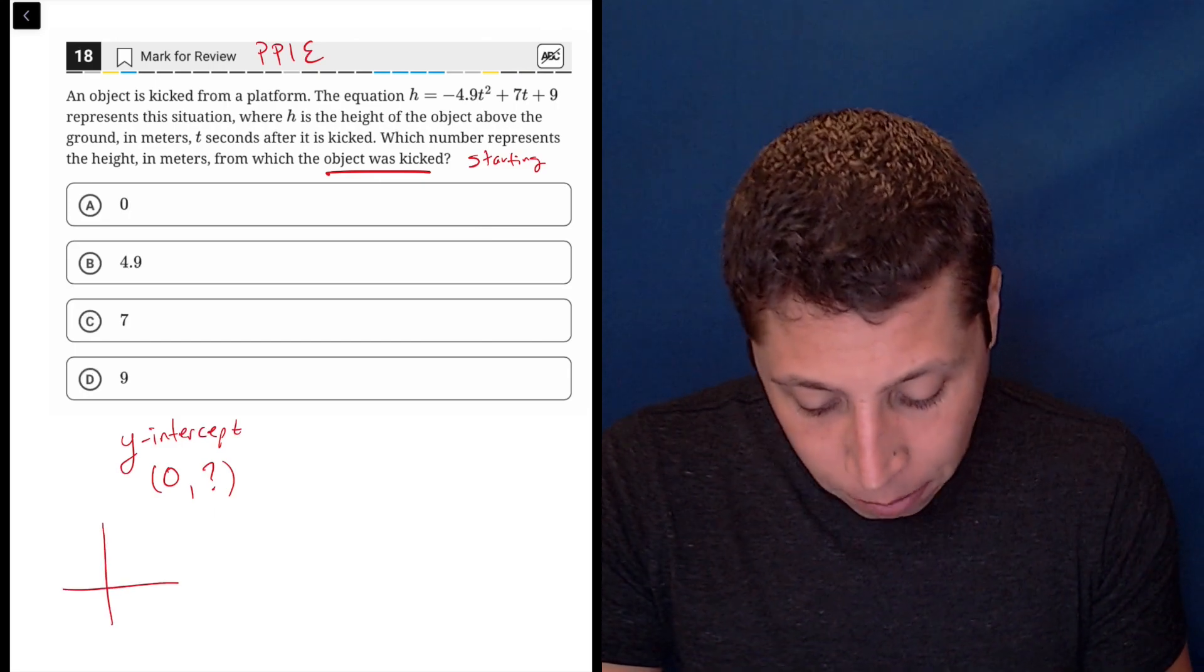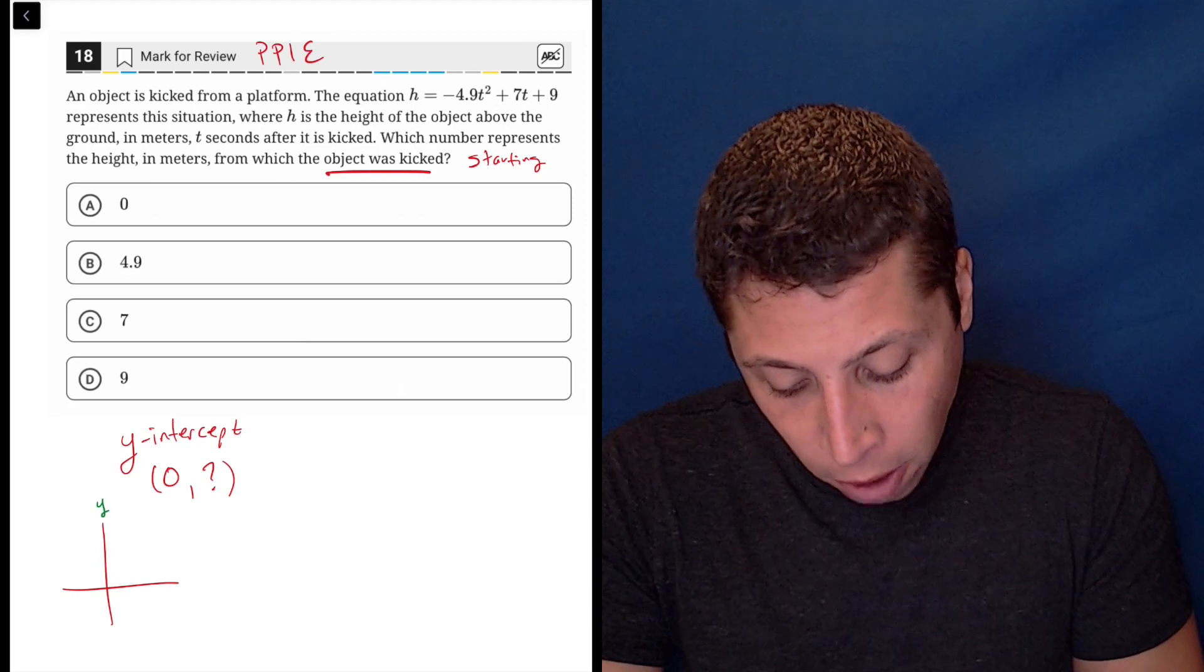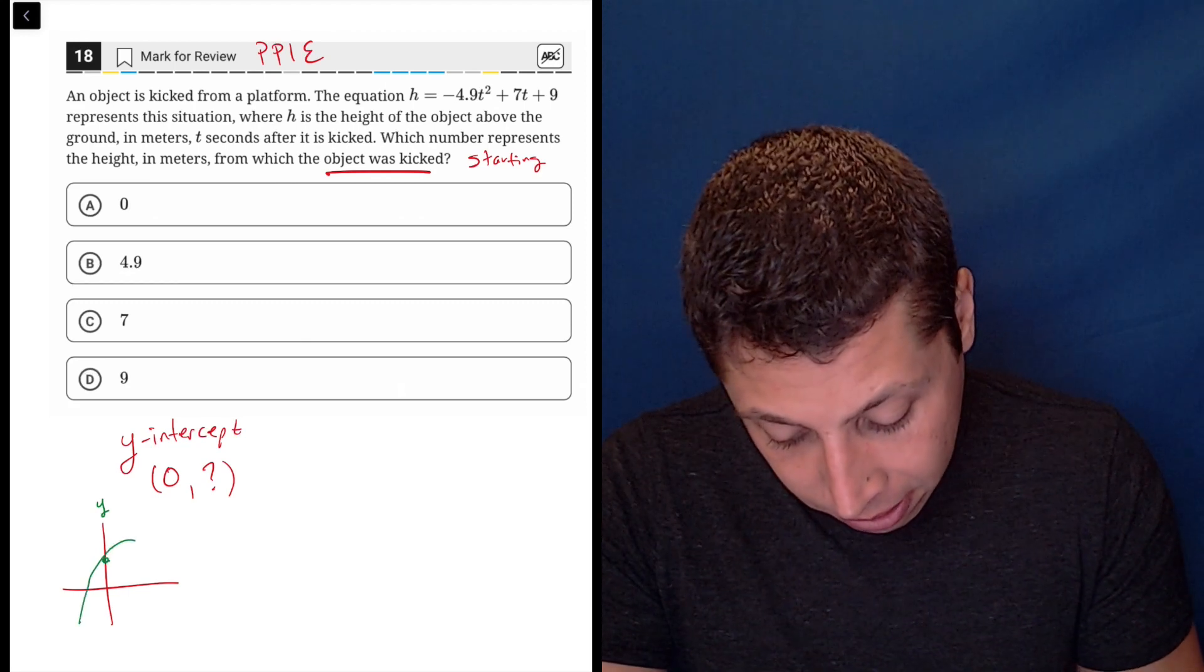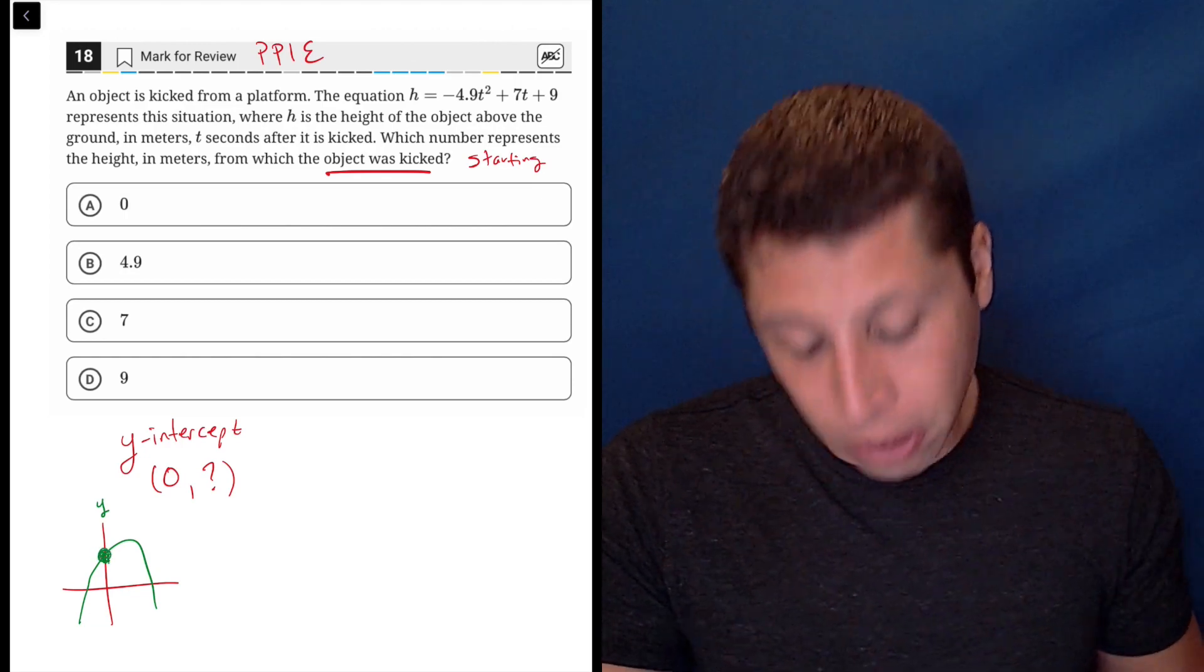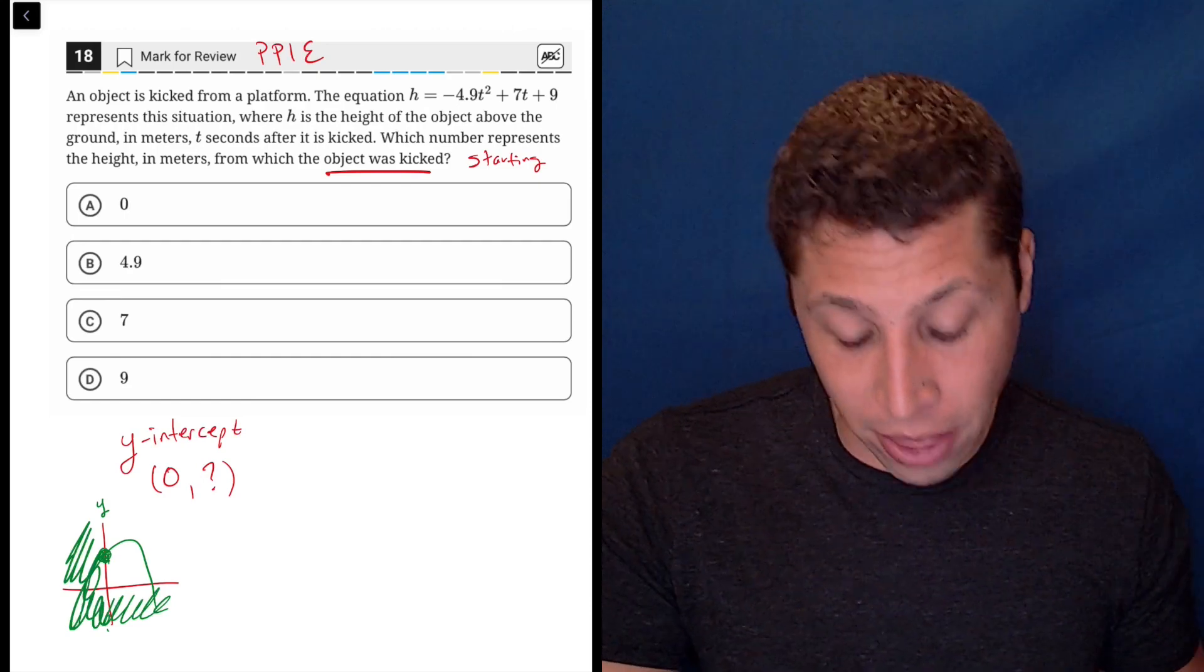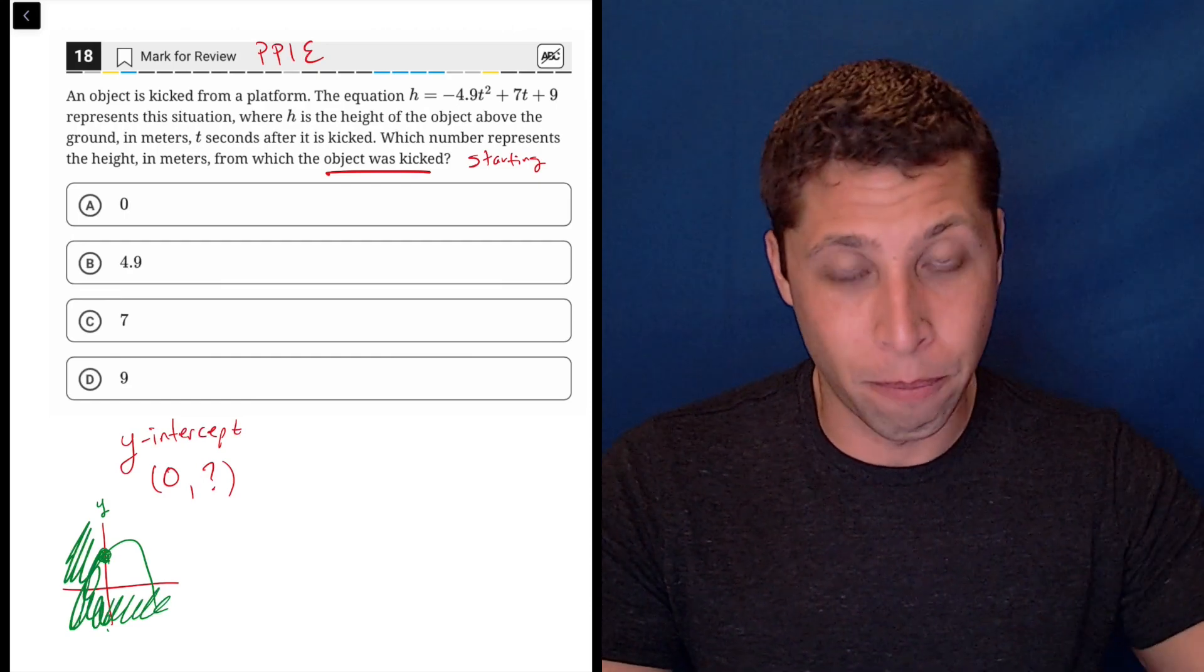So we're looking for what goes with that. A y-intercept is where on the y-axis we cross the y-axis. So this does something like this. And we care about this point right here because there's no negatives.